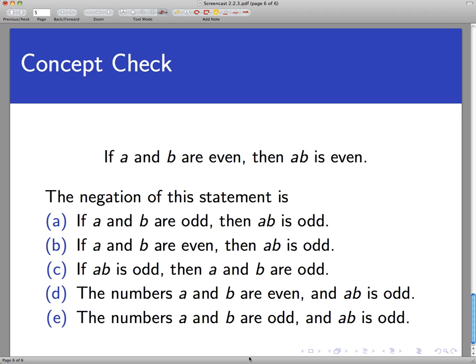So if you've been paying a little bit of attention to this video, you know you can immediately eliminate the first three. How come? Because they're if-then statements, and the negation of an if-then statement is not another if-then statement. So that rules those three out automatically. So what is the negation?